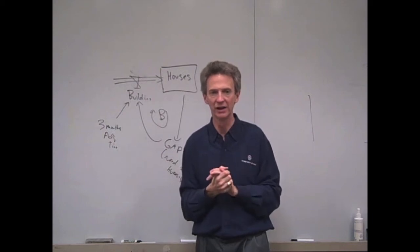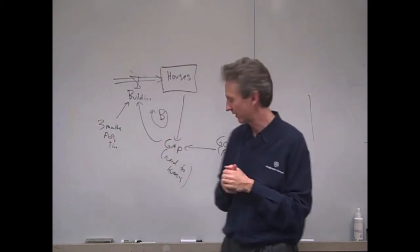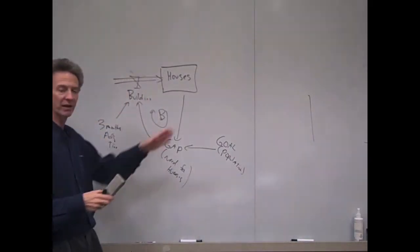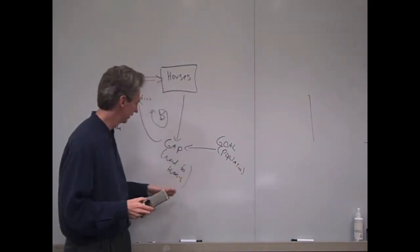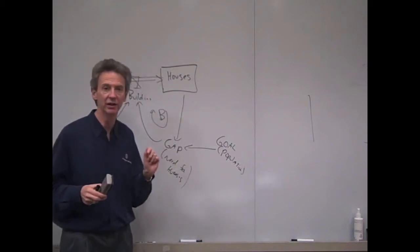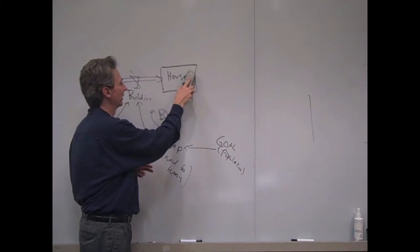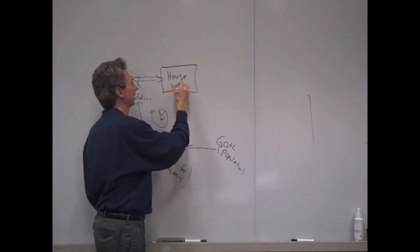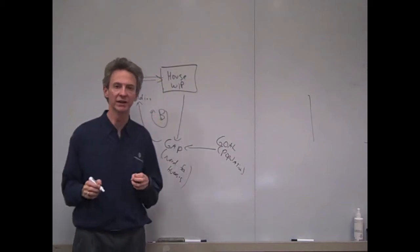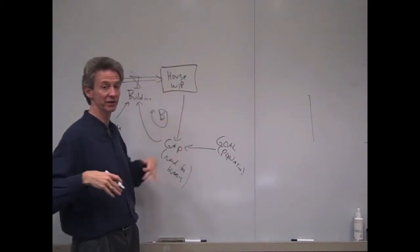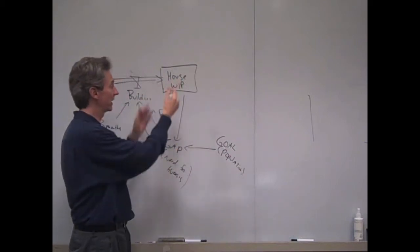That should be adequate for our model. So let me draw that for you. Essentially, the rest of this is okay. You have a goal. You have a gap to the goal. And that drives builders to build. Once they start building, it doesn't become a house. It becomes a house work in progress. That's WIP. So that's what builders are doing. They're starting houses. And it becomes that stock.